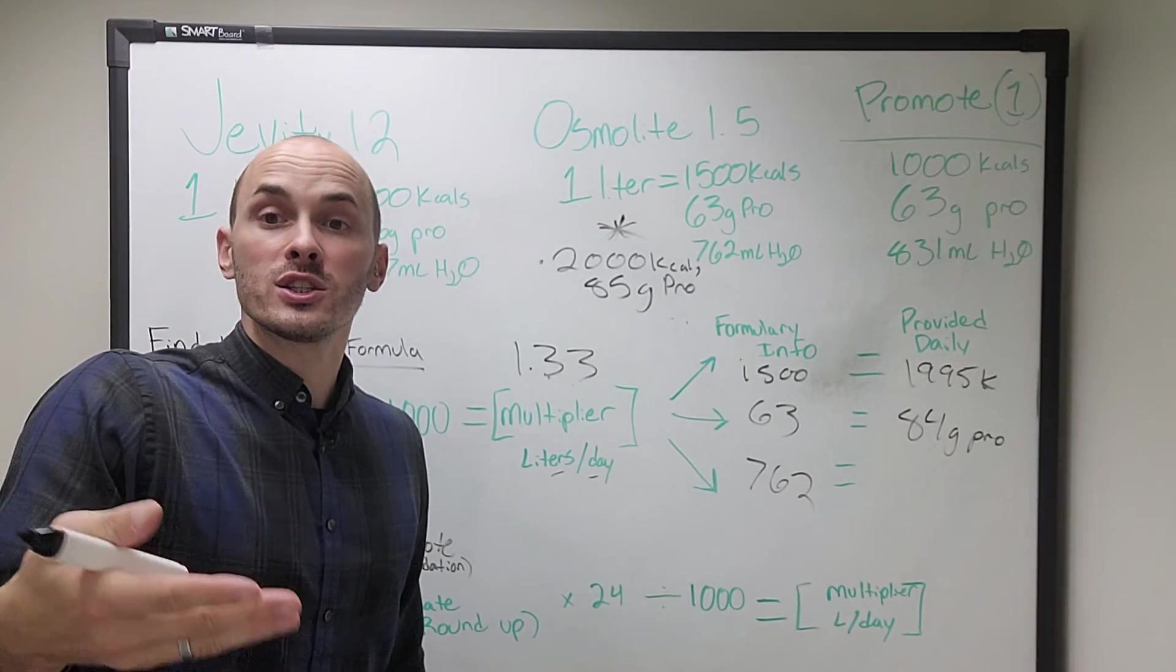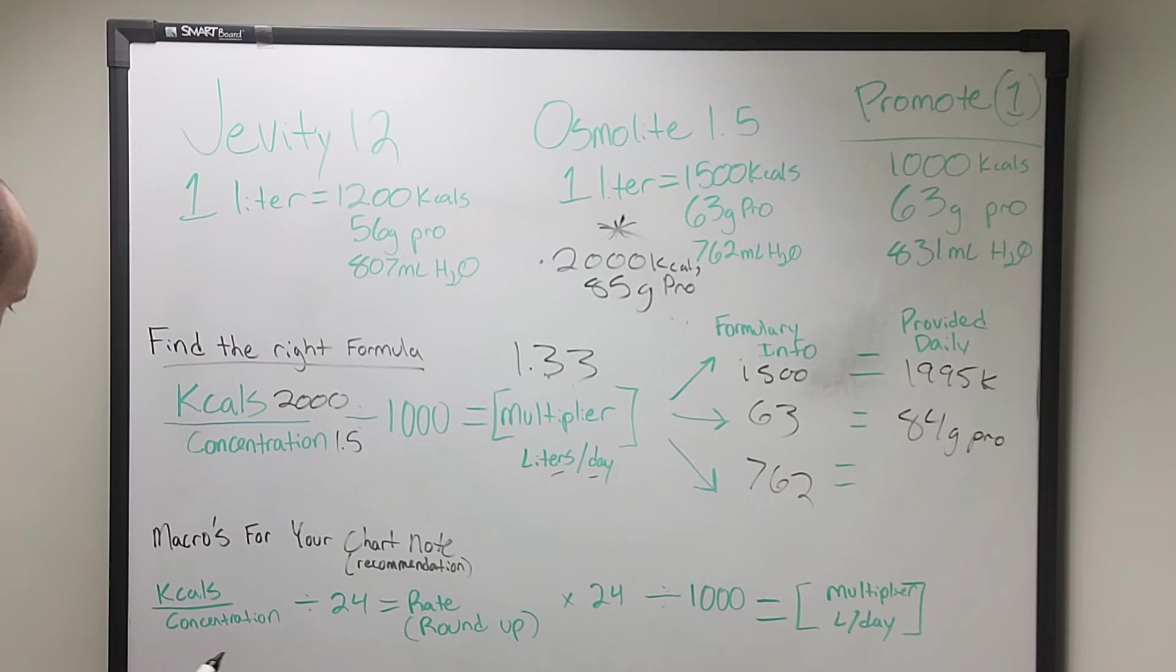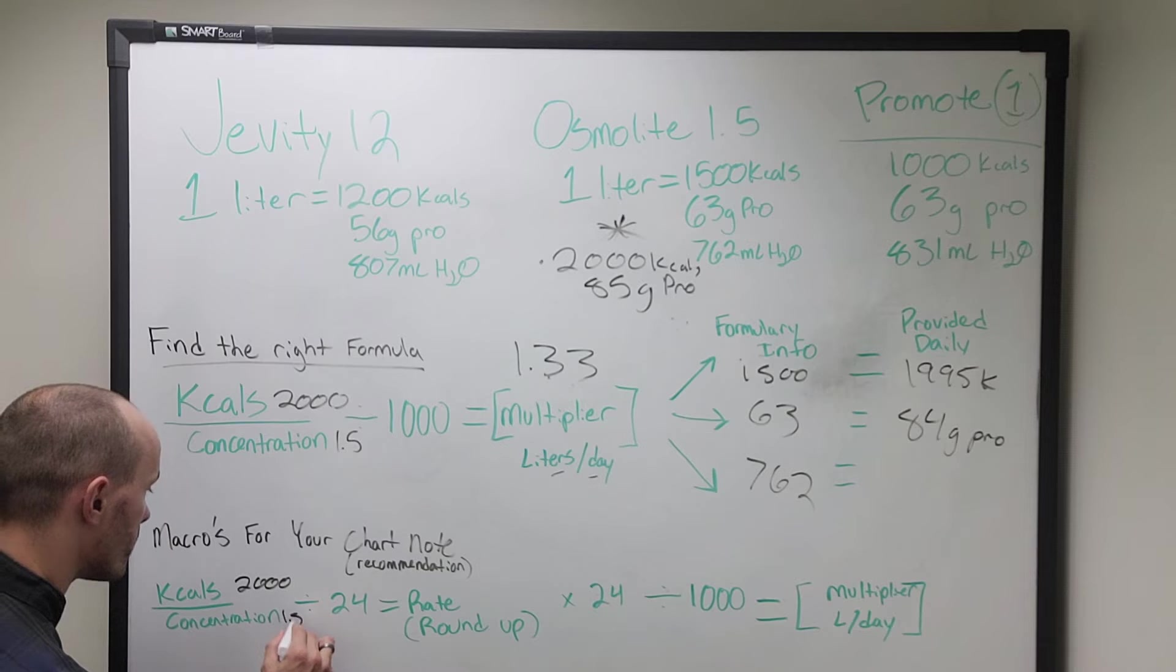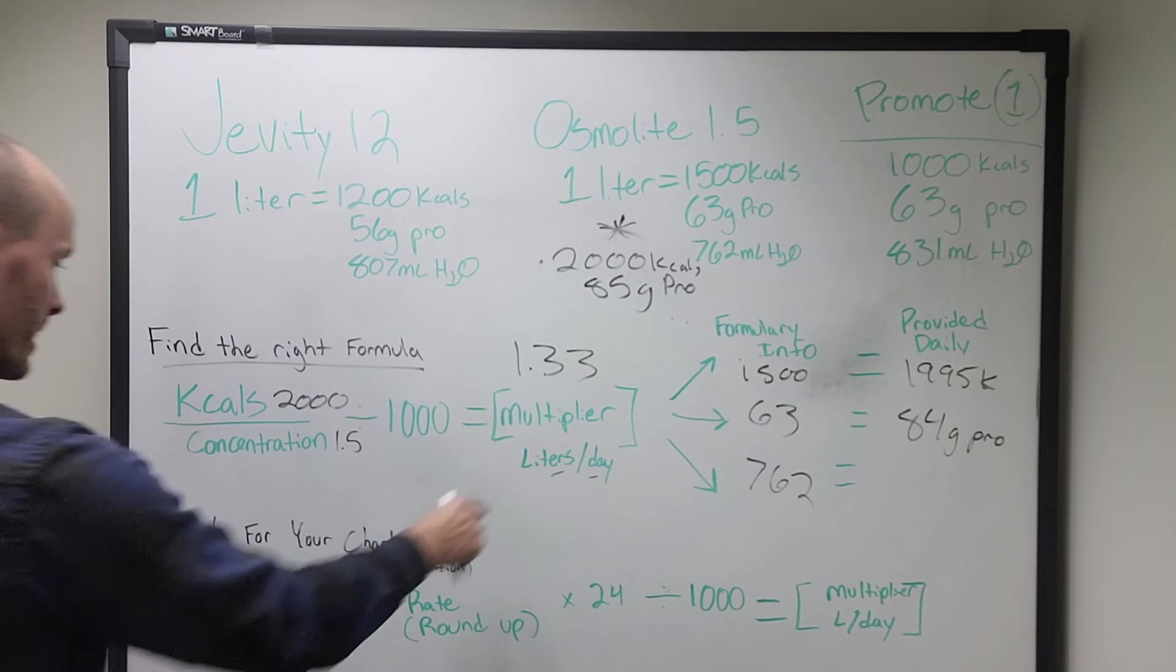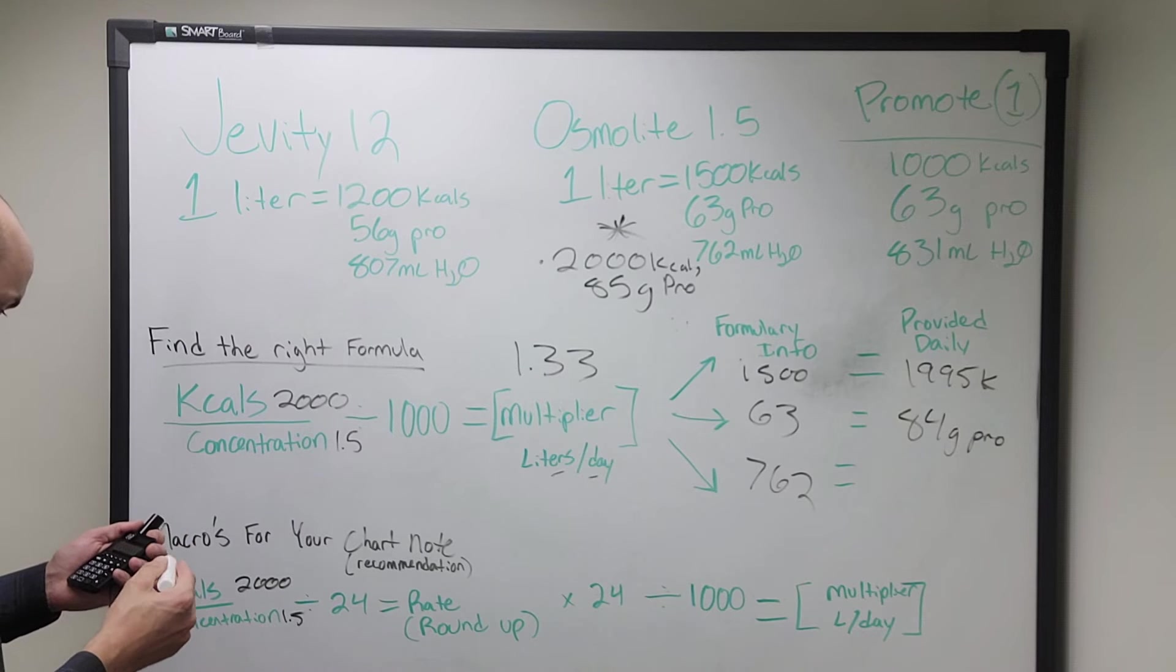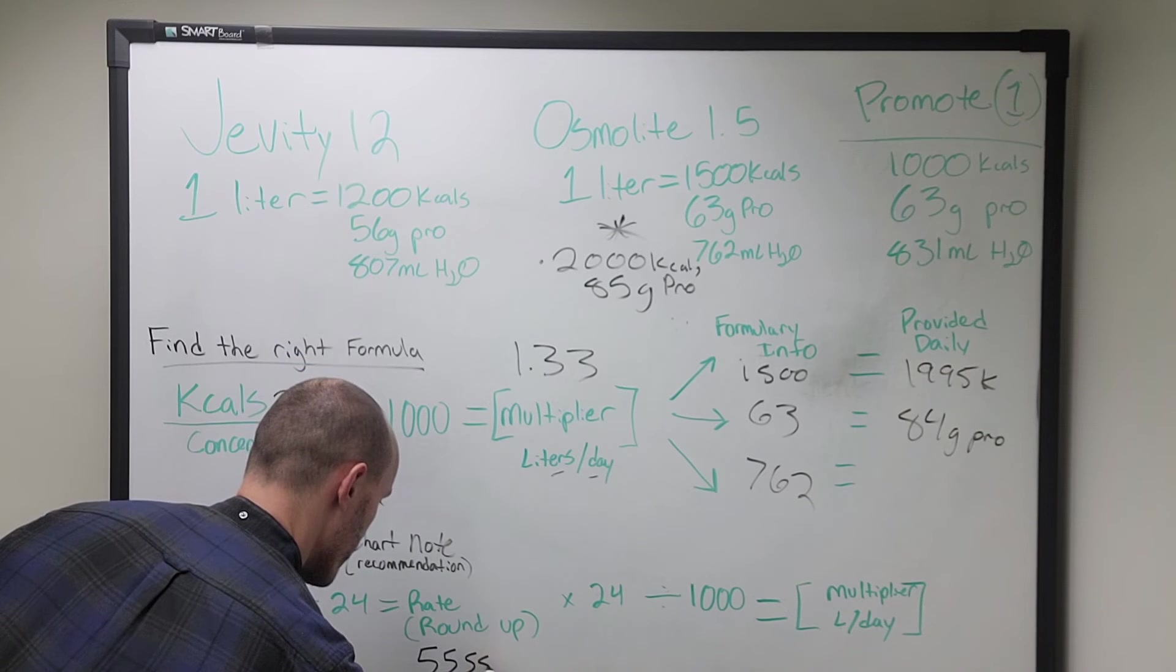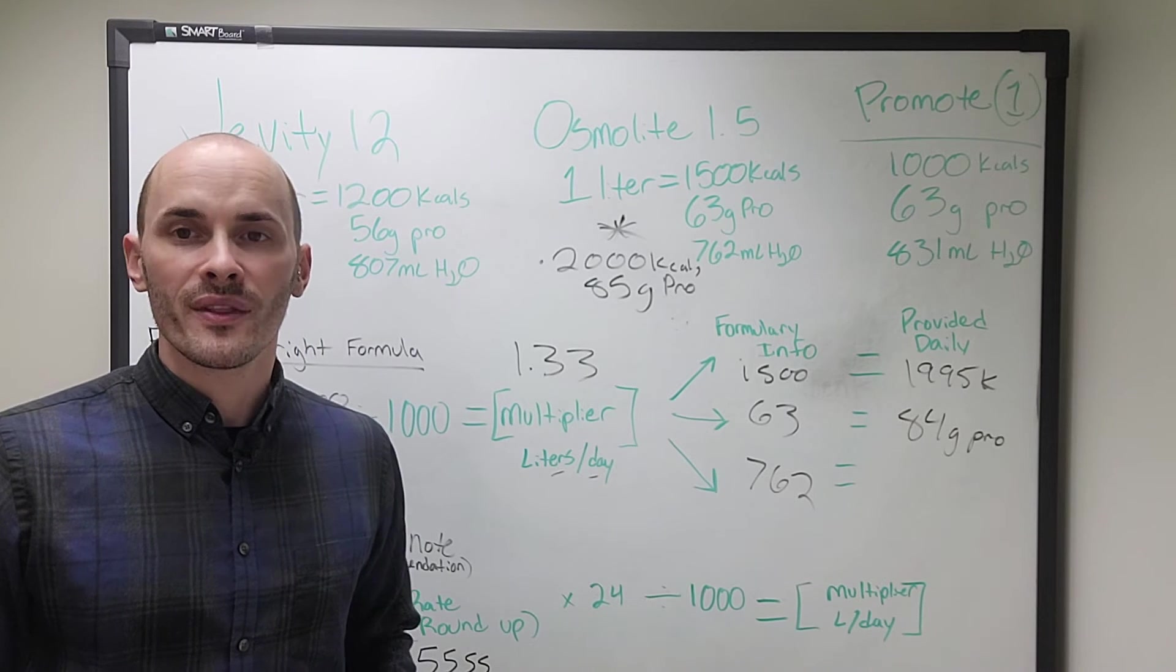Now, how are we going to know what rate to run it at and what our chart note should read? That's where this bottom equation can come in. I hope y'all can read it. So kcals divided by concentration. So the same thing we did up here. 2,000 divided by 1.5. So 2,000 divided by 1.5 gives us this number. We're going to take that and we're going to divide that by 24. That's going to give us 55.55. 55.55 milliliters per hour is what we would have to run this formula at.